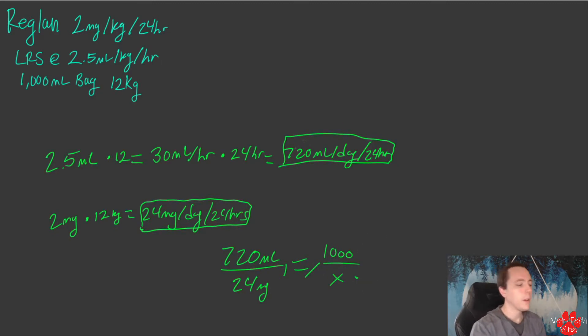1000 times 24 is 24,000. Take 24,000 divided by 720, and that gives you 33.3 mg. So we now know we need to add 33.3 mg of Reglan to a 1000 ml bag to be given at 30 ml an hour, so the patient can get 2 mg per kg per day of Reglan. See? Makes sense?